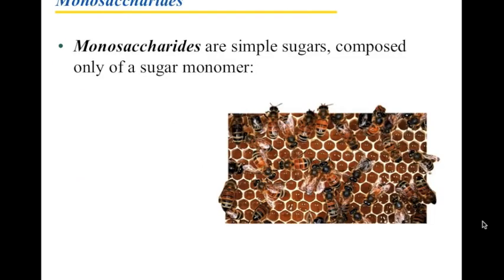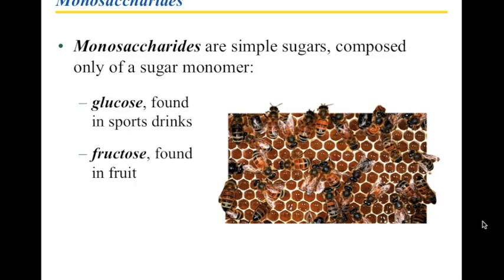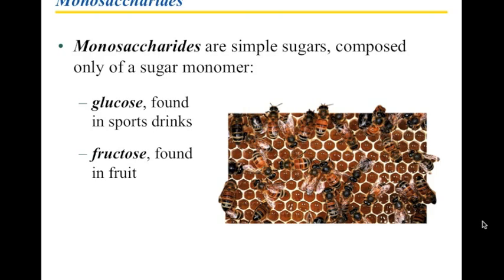But how do you build one of these? As I mentioned before in the first part, we need the monomer, the single unit. And the single unit of a carbohydrate is called a monosaccharide. Monosaccharide simply means single sugar. They are the simplest of the sugars, simplest of the carbohydrates, and you only have a single sugar monomer. For example, glucose or fructose. Those are simple sugars, monosaccharides. Honey, as an example, has in it both glucose and fructose. So this is a natural product, and it's a well-distributed product throughout nature.